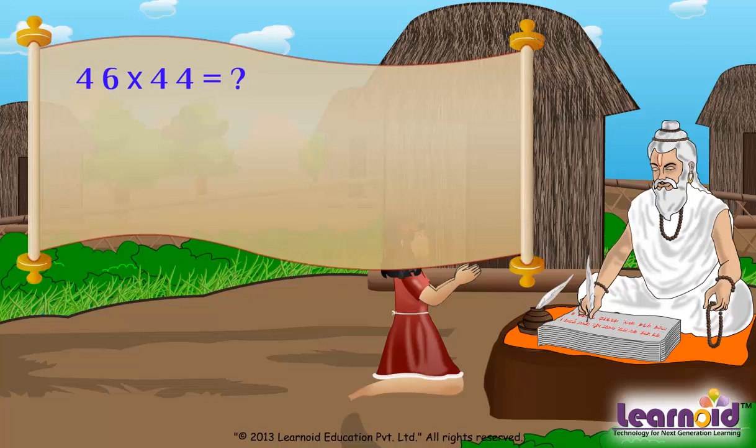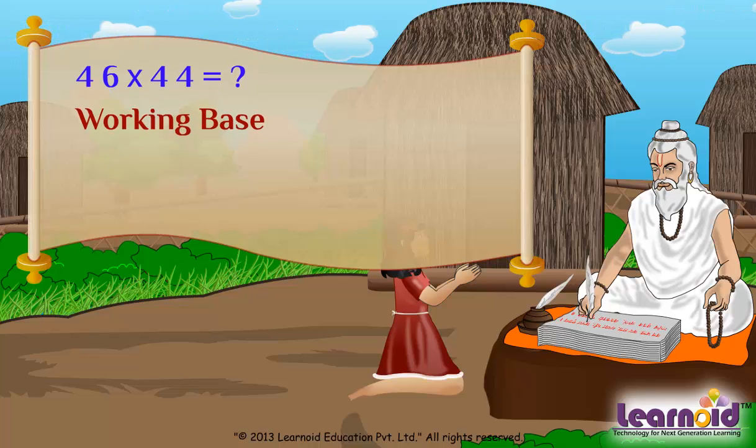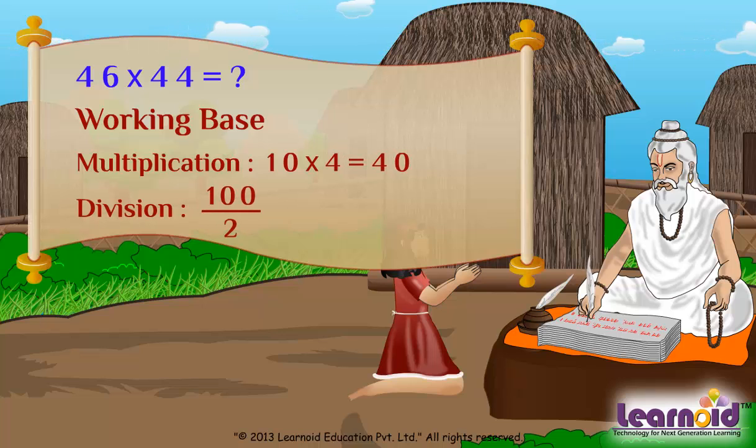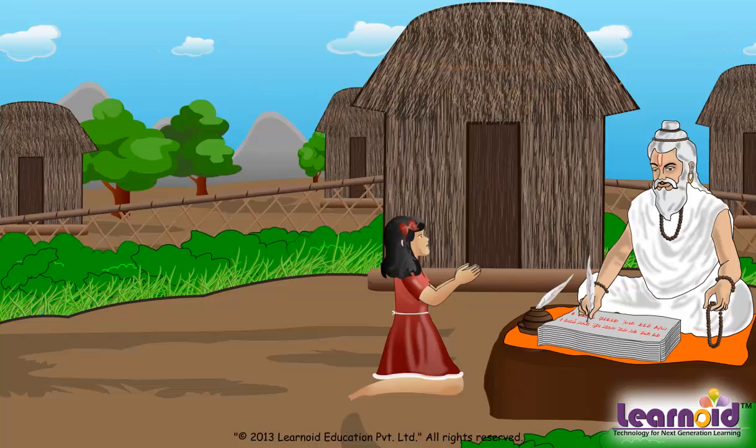For 46 by 44, working base can be either 10 into 4 equals 40 or 100 by 2 equals 50. Let's try using both working bases.